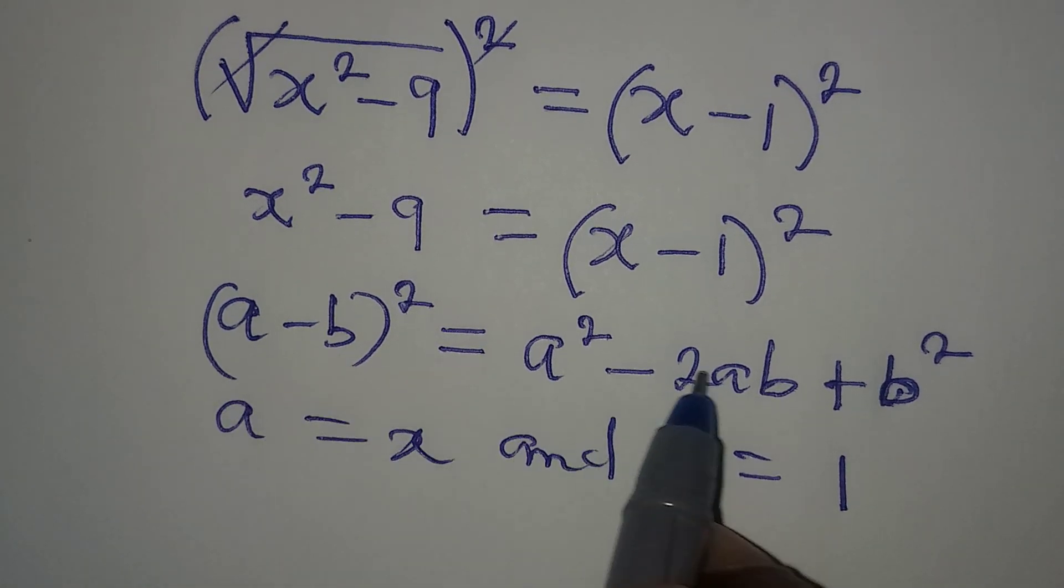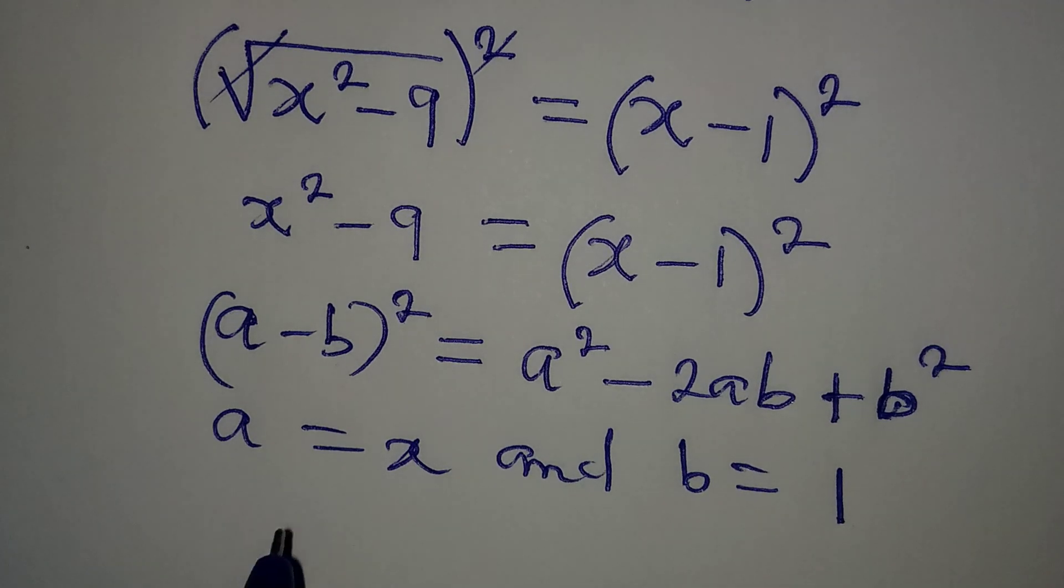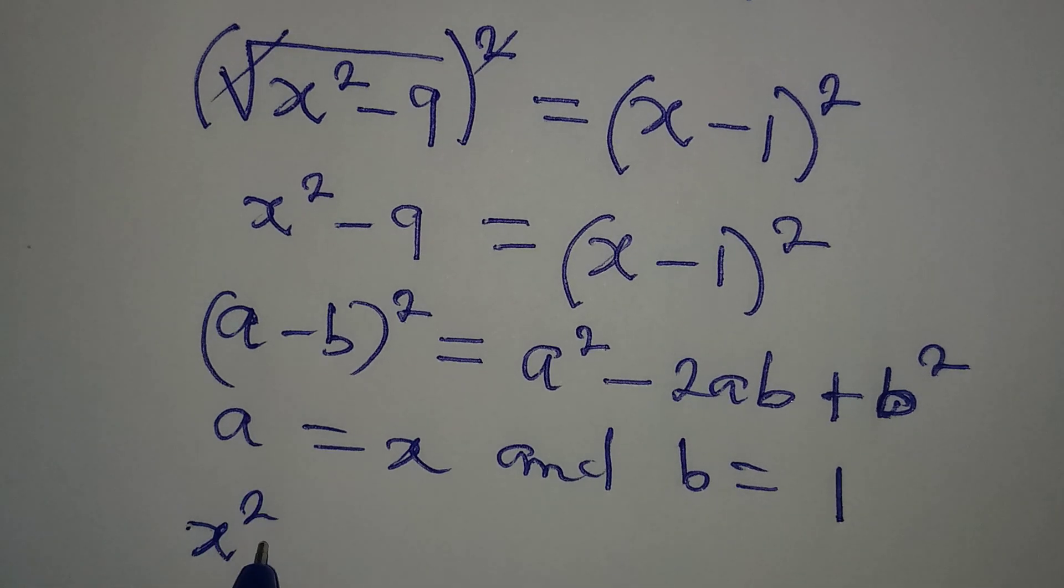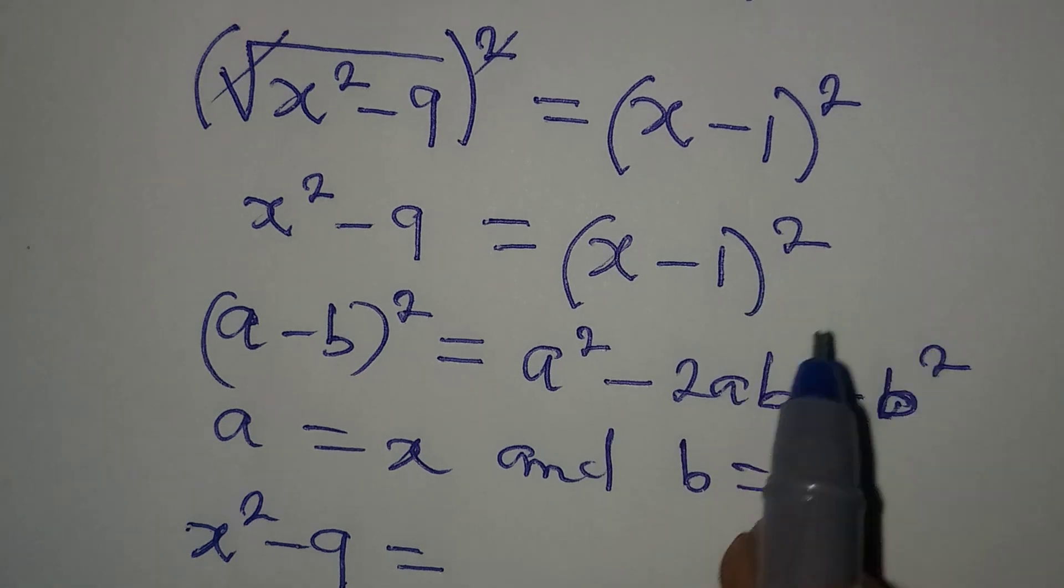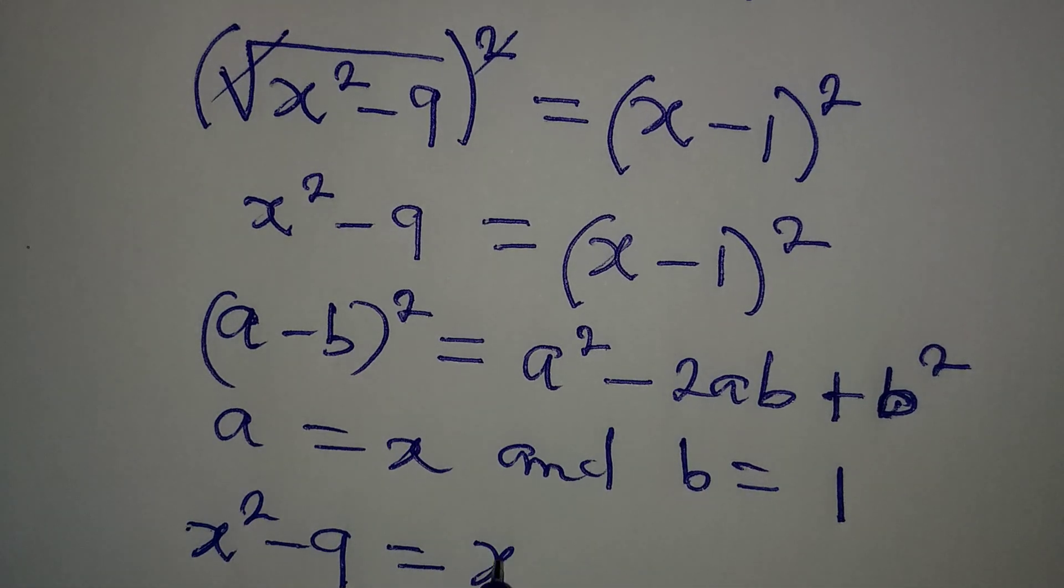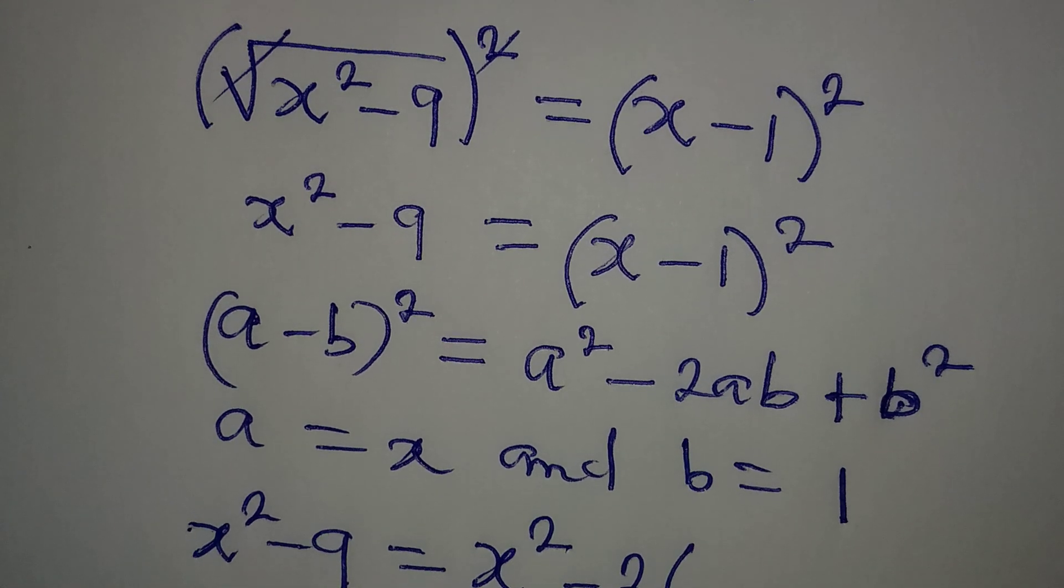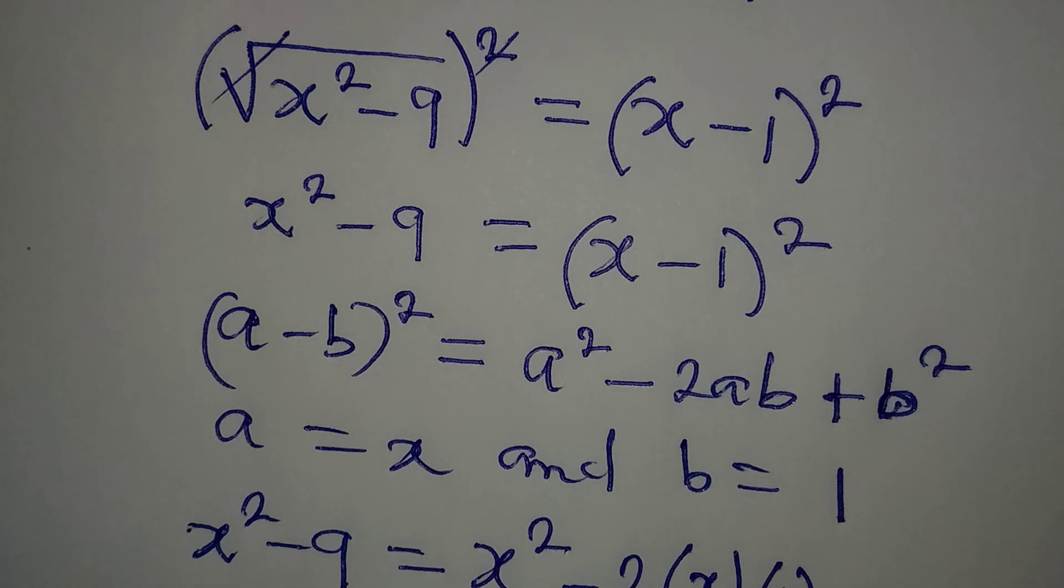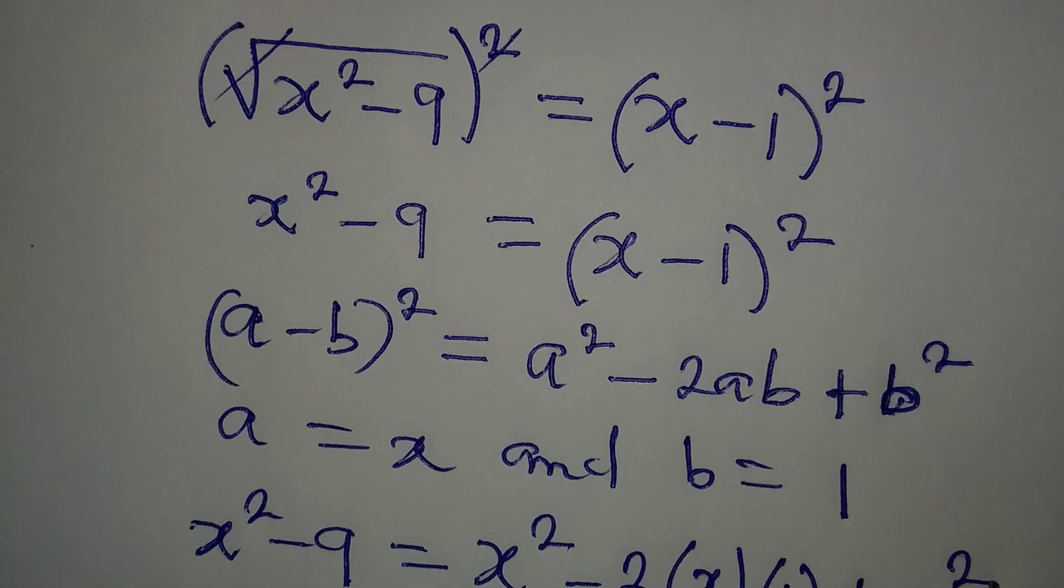Now we substitute into this standard. So we are going to have x squared minus 9, then equal to, on this side, we have x squared minus 2 multiplied by a is x and b is 1. Then plus b squared, that will be 1 squared, right?